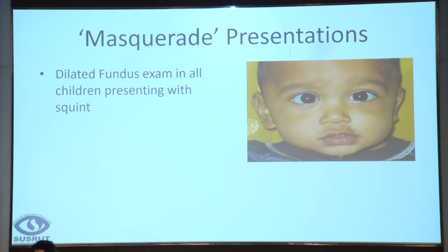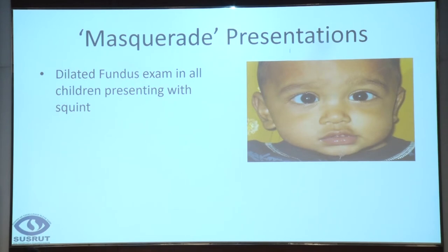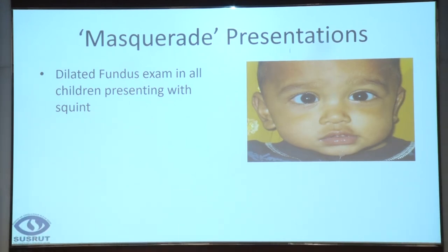This is a child with early esotropia. But if you look very carefully, there is a little white glow here. The first presentation of this child was the squint itself. A simple dilated examination revealed that there was a tumor in the macula. If all our colleagues examined every child presenting with a squint on the first instance by a dilated fundus examination, you could pick up retinoblastoma in these children earlier, instead of saying there's a squint — let the child get older and then we'll take care of it.